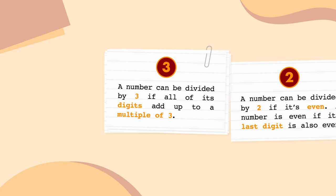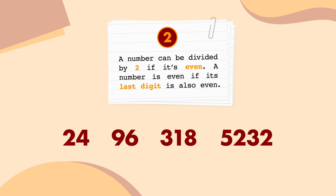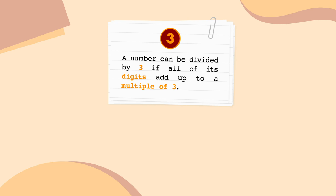A number can be divided by 2 if it's even — that means we can split it in half without any left over. A number is even if its last digit is also even, like 24, 96, 318, 5232, and so on. A number can be divided by 3 if all of its digits add up to a multiple of 3. For example, I know that 27 can be divided by 3 because 2 plus 7 is equal to 9, which is a multiple of 3.